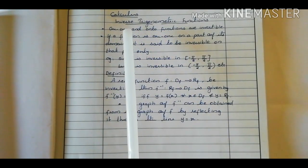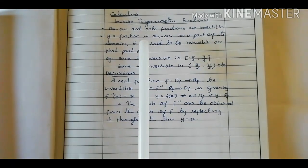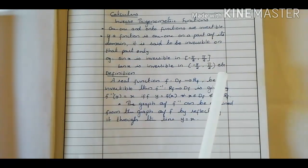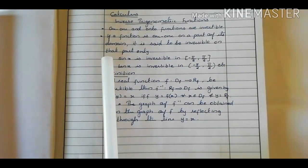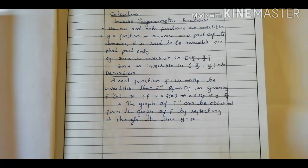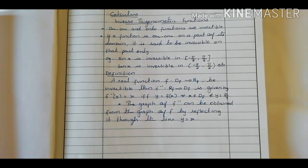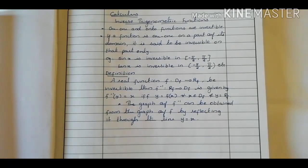We know that values of sin x vary from minus 1 to plus 1, but after some interval it will repeat — again values vary from minus 1 to 1. You can take a specific interval, such as the closed interval minus pi by 2 to pi by 2. We know that sin(−π/2) is −1 and sin(π/2) is 1. For that specific closed interval minus pi by 2 to pi by 2, you will get distinct images for sin x. But if you take next values, the same values will repeat.